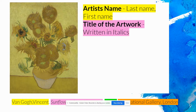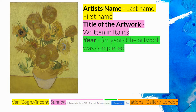The title is written in italics — those slanty letters. This example is called Sunflowers; it's actually the fourth version of the painting he did, so the title is 'Sunflowers, Version Four,' followed by a period. Next, in green, is the year that the work of art was completed.